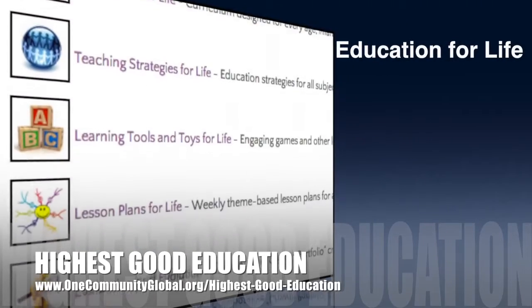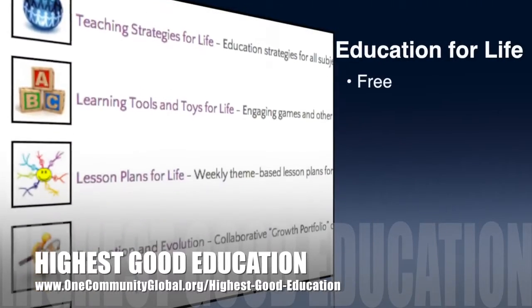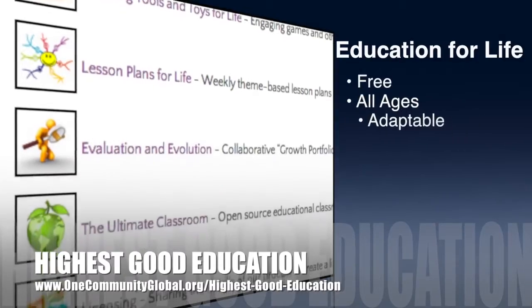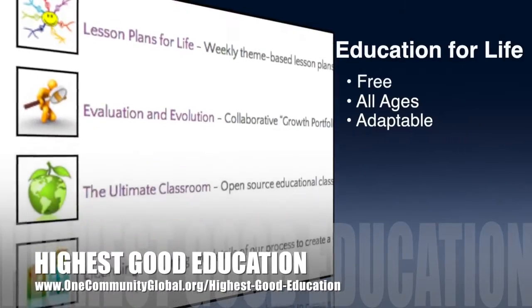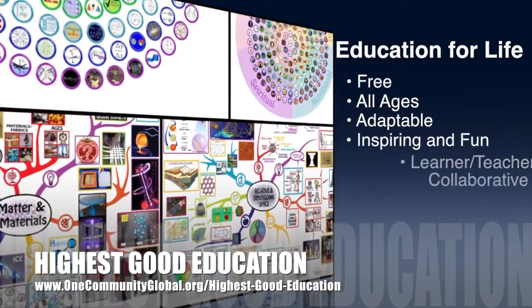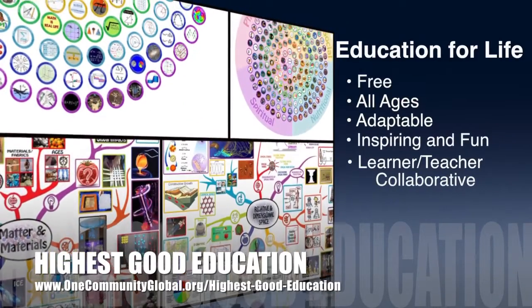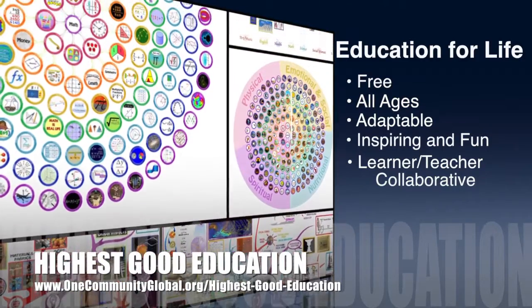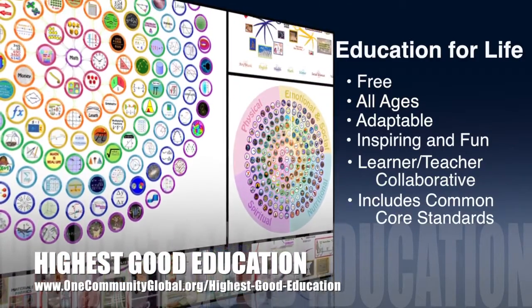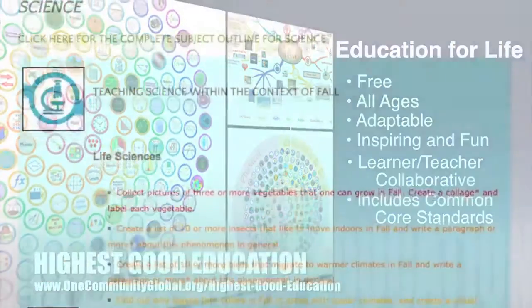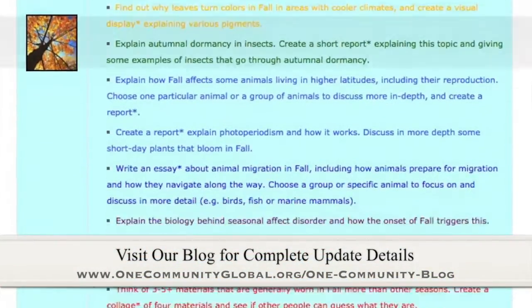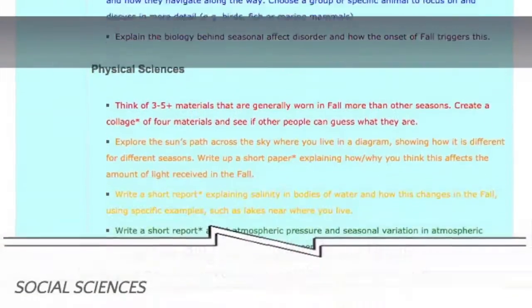One Community's approach to highest good education is open source and free shared, designed for all age groups, adaptable to any schooling environment, inspiring and fun for all participants, a learner-teacher collaborative, and it includes US Common Core Standards. This week the core team, which includes the pioneer members plus those helping who don't wish to be individually acknowledged,